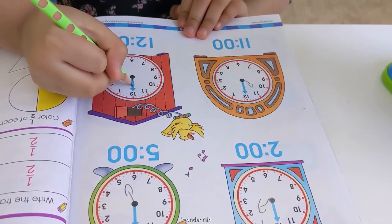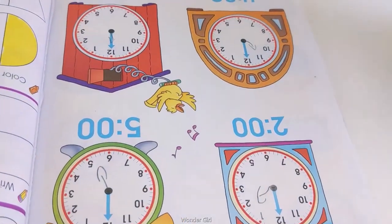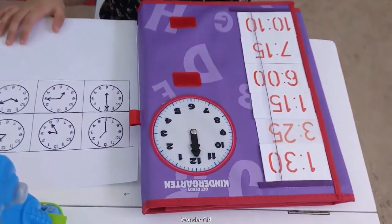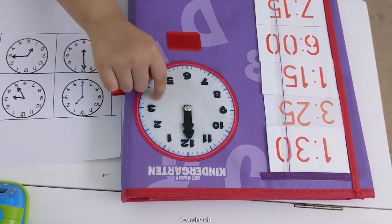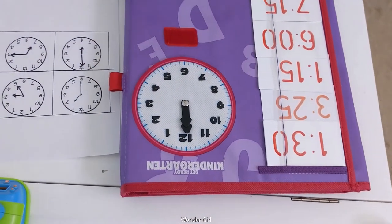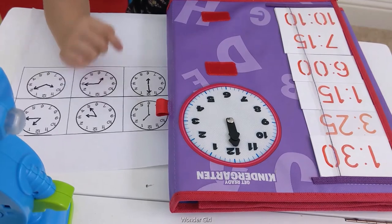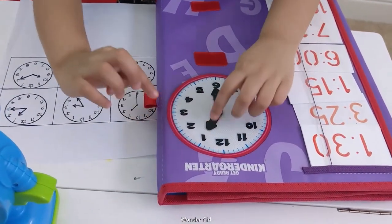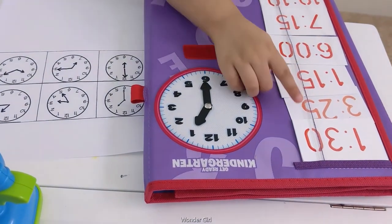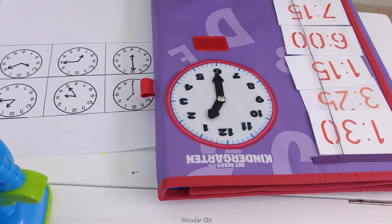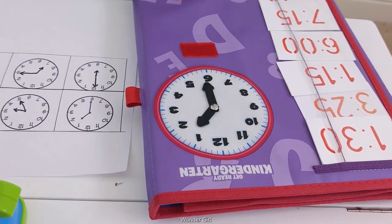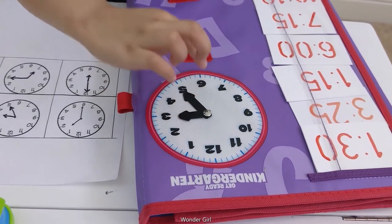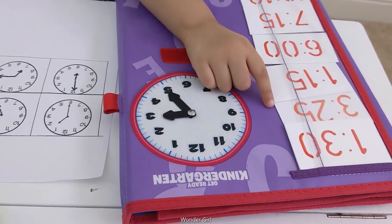Now I have clock worksheets and flashcards. I'm going to match the flashcards to the clocks. This is 1:30 flashcard. This is 3:25 flashcard. This is 1:35 flashcard.